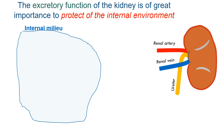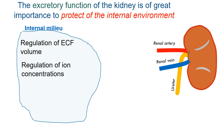It is prudent to start our discussion of renal clearance by first reviewing the role of the kidney in this process. A major role of the kidney is to protect the internal environment, and it does this by a number of processes. First of all, it regulates the extracellular fluid volume; the kidney regulates the ion concentrations of the internal milieu; it regulates the osmolality and the pH.